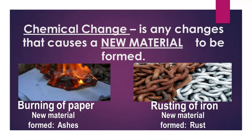Chemical change is any change that causes a new material to be formed. For example, burning of paper: when we burn paper, it will turn into ashes. So the new material formed is ashes — that is chemical change. Next is the rusting of iron: when iron gets wet, it will form rust. So rusting of iron is an example of chemical change because a new material — rust — is formed.